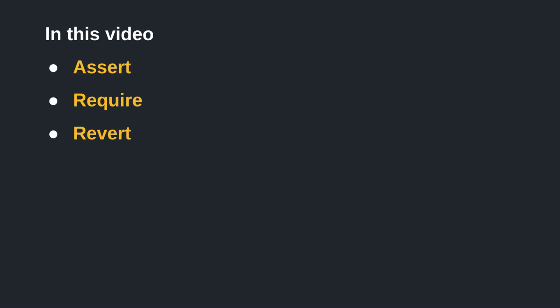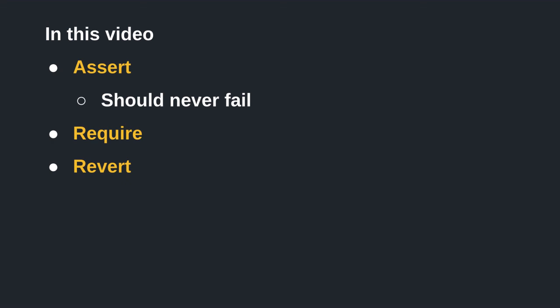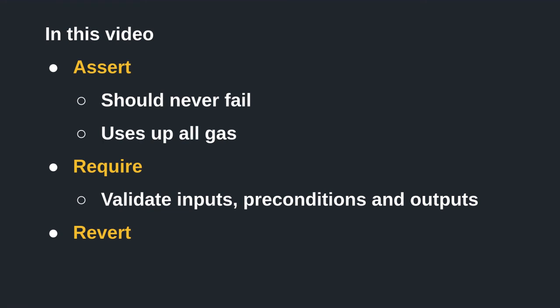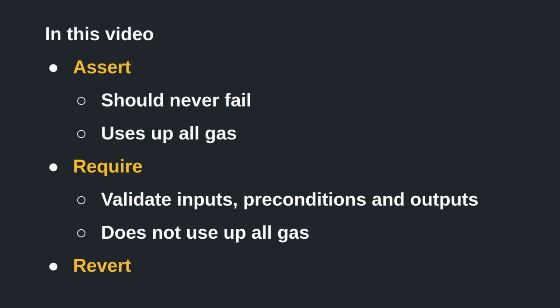In this video, we talked about the three ways to throw an error: Assert, Require, and Revert. Assertions should never evaluate to false — if they do, that means there's a bug in your code, and a failing assertion uses up all of the gas sent with your transaction. Require is used to validate inputs, preconditions, and other function outputs. When a require statement fails, it does not use up all of the gas. In situations where you use require, you can also write equivalent code using revert, but revert is more useful when checking complex conditions. Thanks for watching, and have a nice week.